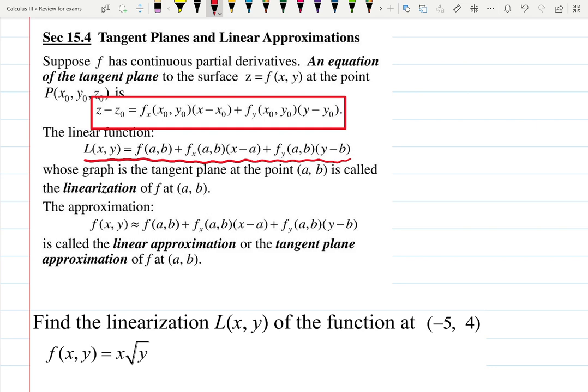We did this in Calculus 1 class with lines. When the function was given at the point, we could find a tangent line and approximate, for example, this value with the value on the line instead. The difference would be the error.